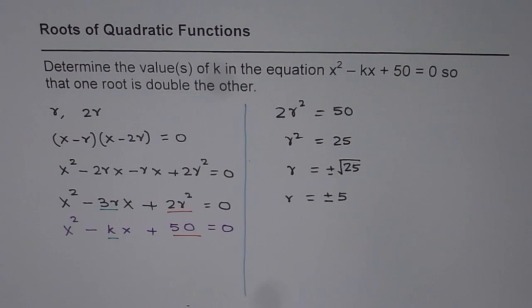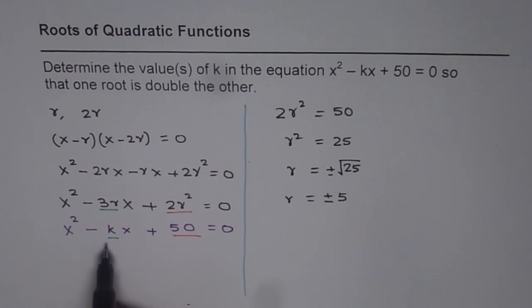We get two possible values of r, and now with these possible values, we can find values for k. Now, we will compare 3r with k and find what k is.